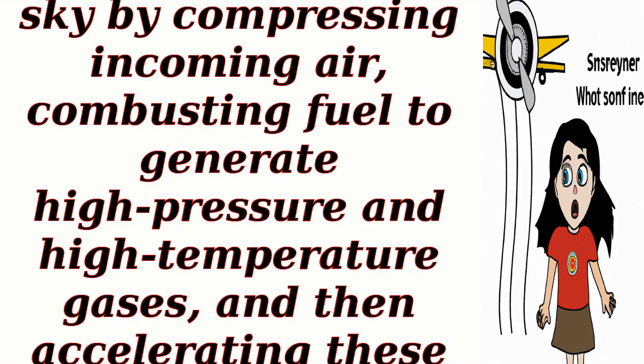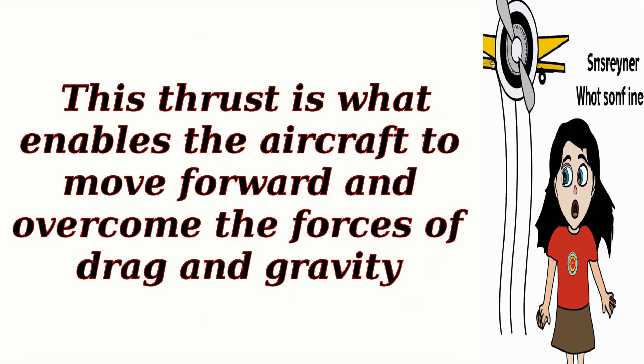In summary, a jet engine propels an aircraft through the sky by compressing incoming air, combusting fuel to generate high-pressure and high-temperature gases, and then accelerating these gases out the exhaust nozzle to create thrust. This thrust is what enables the aircraft to move forward and overcome the forces of drag and gravity.